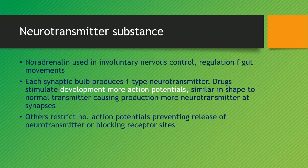Other drugs restrict the release of acetylcholine, preventing the release of neurotransmitter or blocking receptor sites. This means drugs can either develop more action potentials — as these drugs are similar in shape to normal transmitters such as acetylcholine, causing production of more EPSPs — or they can prevent the release of neurotransmitter, block receptor sites, and therefore reduce EPSPs.